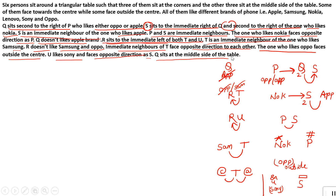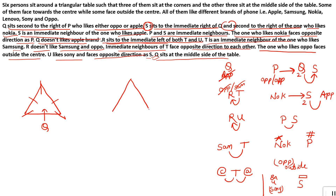Q sits at the middle side of the table — this is very important information. Q is sitting at the middle of one side. So first we draw the triangle. We know three persons sit at corners and three at the middle. Since Q is definitively at the middle side, we place Q there, but there are still two possibilities: Q facing inside the center, or Q facing outside. We make two cases — case one and case two.